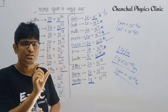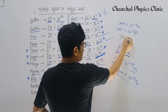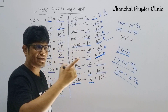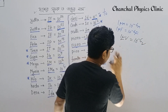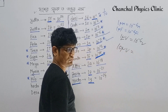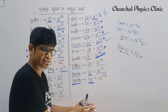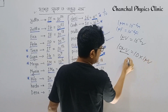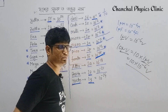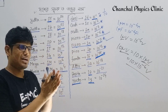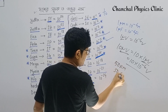What is 1 microvolt? 1 microvolt means 10 to the power minus 6 volts. So 10 microvolts equals 10 times 10 to the power minus 6. Similarly, 10 nanometers equals 10 times 10 to the power minus 9 meters.